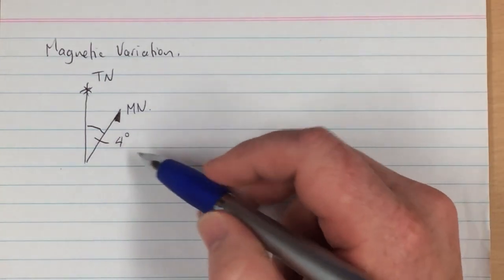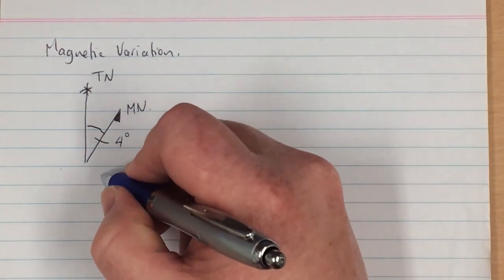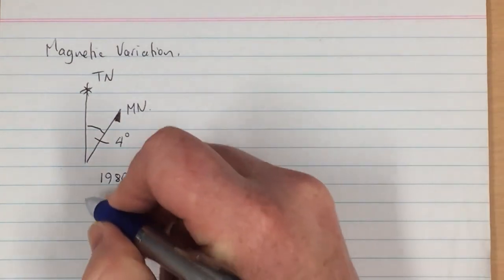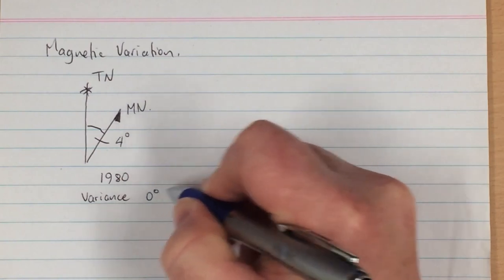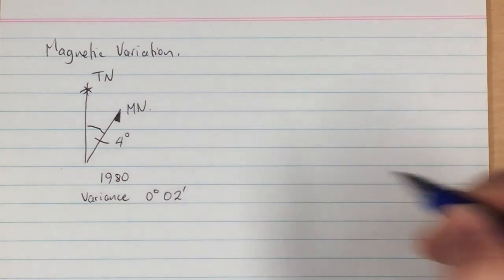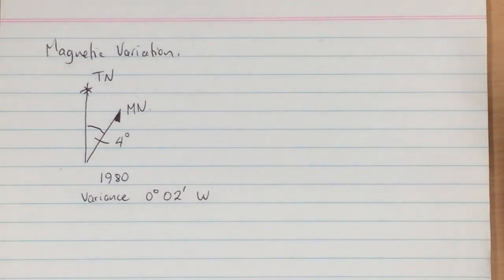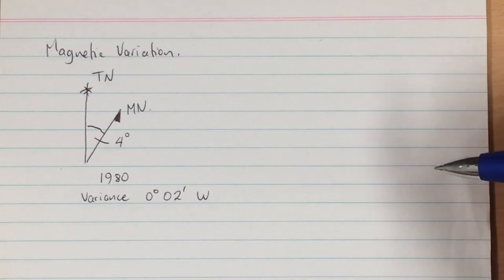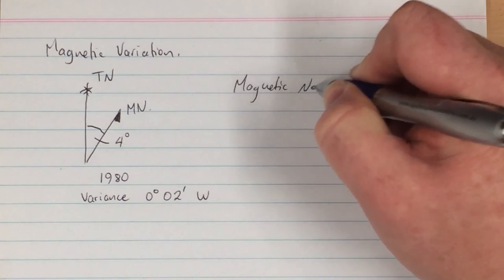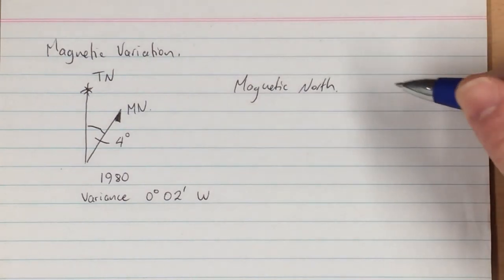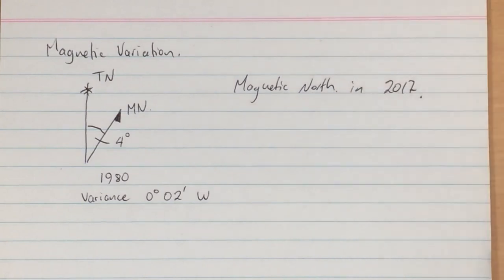So where magnetic north might be 4 degrees east of true north at this particular time, for example in 1980, there might be a variance of 0 degrees and 2 minutes in a westerly direction each year. So to determine the location of magnetic north at any given point in time, for example in the year 2017,